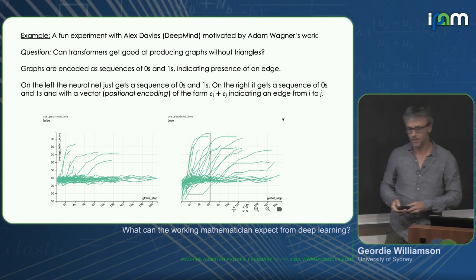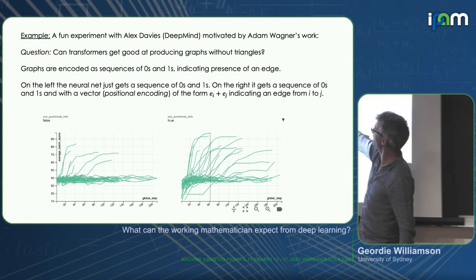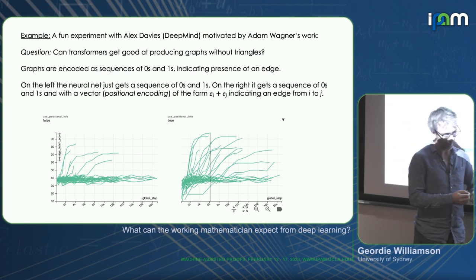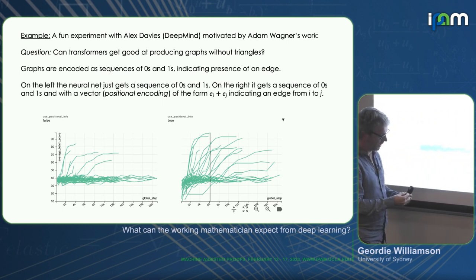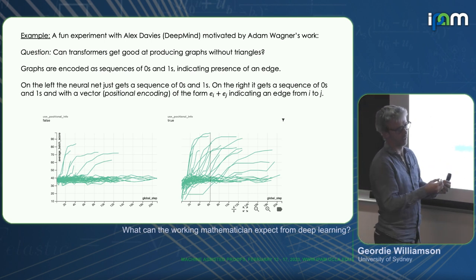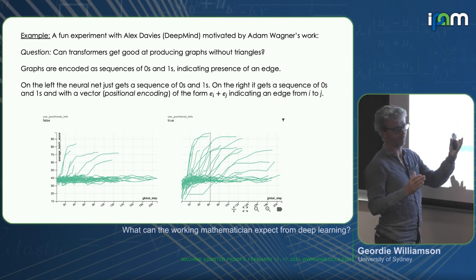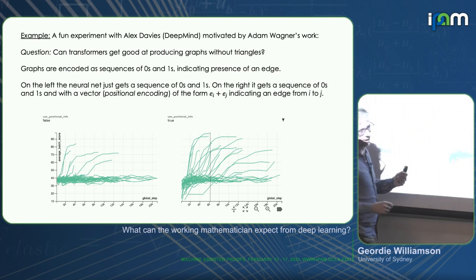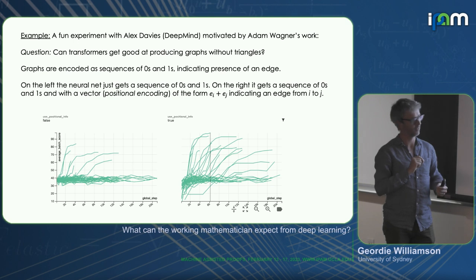And here, we tell the neural net the positional encoding to know that there's some relation between i and j. In the original encoding, it's just getting the zero one sequence. It has no idea it's to do with graphs. And it's kind of amazing that it does do somewhat well. So each of these are different runs. But you see it's doing much better when it has that information.